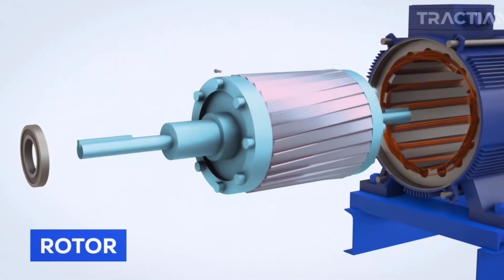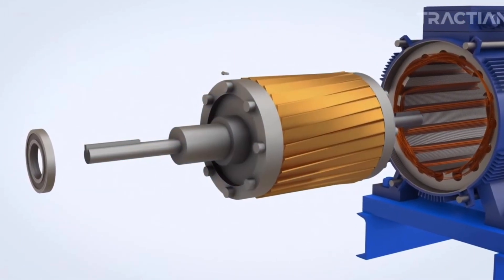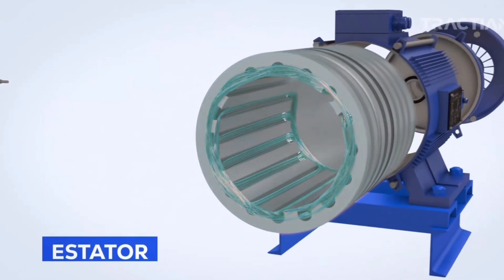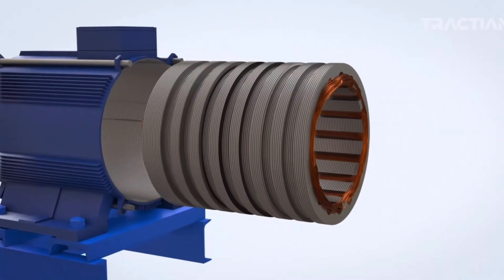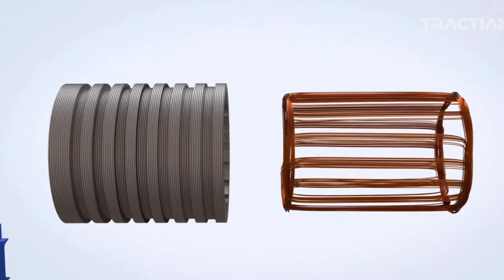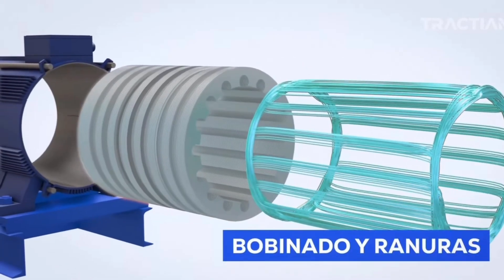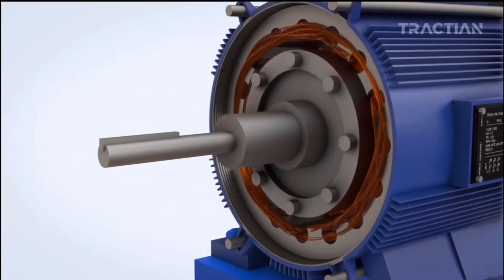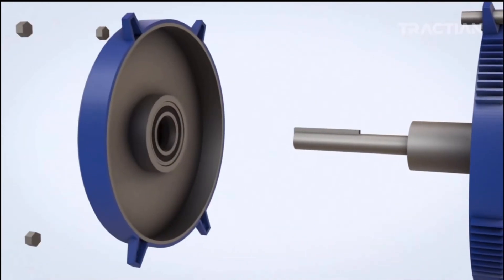The stator, with its windings, is where electrical current flows to create the magnetic field. The rotor rotates under the influence of this field, producing motion in a motor or electricity in a generator. Bearings ensure smooth, efficient rotation by minimizing friction, while the shaft transmits motion to other mechanical components.